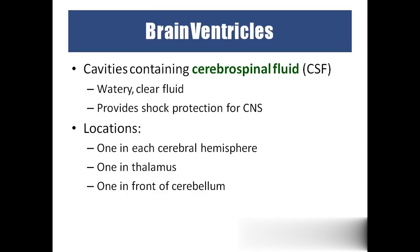Brain ventricles are the spaces inside the brain. Inside those spaces, we have CSF — cerebrospinal fluid — which is a water-like fluid that provides shock absorption for the brain and spinal cord. We have brain ventricles in the cerebrum, thalamus, and cerebellum.